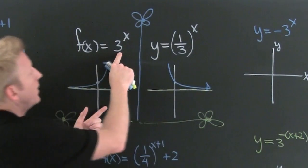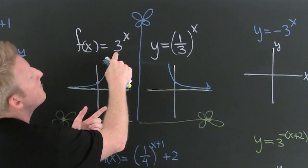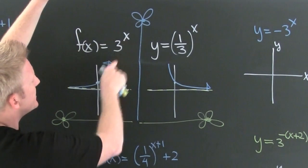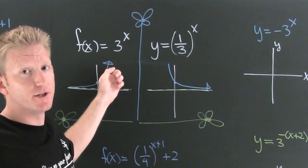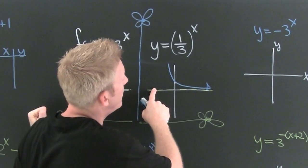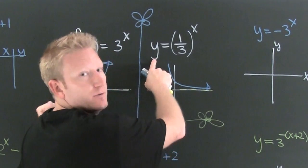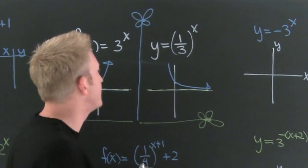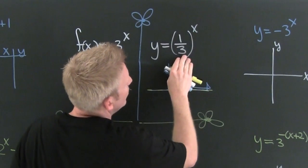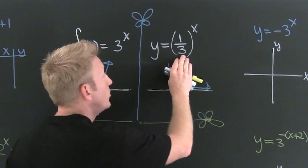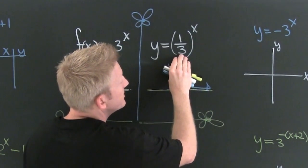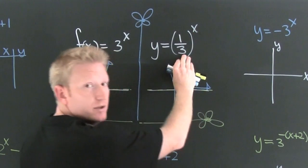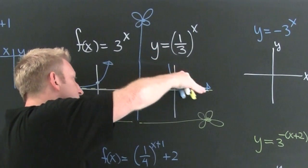This is the basic shape for an exponential function with a base bigger than one — as X increases, the function goes up exponentially. When the base is between zero and one, you're getting a fraction, and when you repeatedly raise it to larger and larger powers, that fraction gets smaller and smaller. This gives us the exponential decay shape.